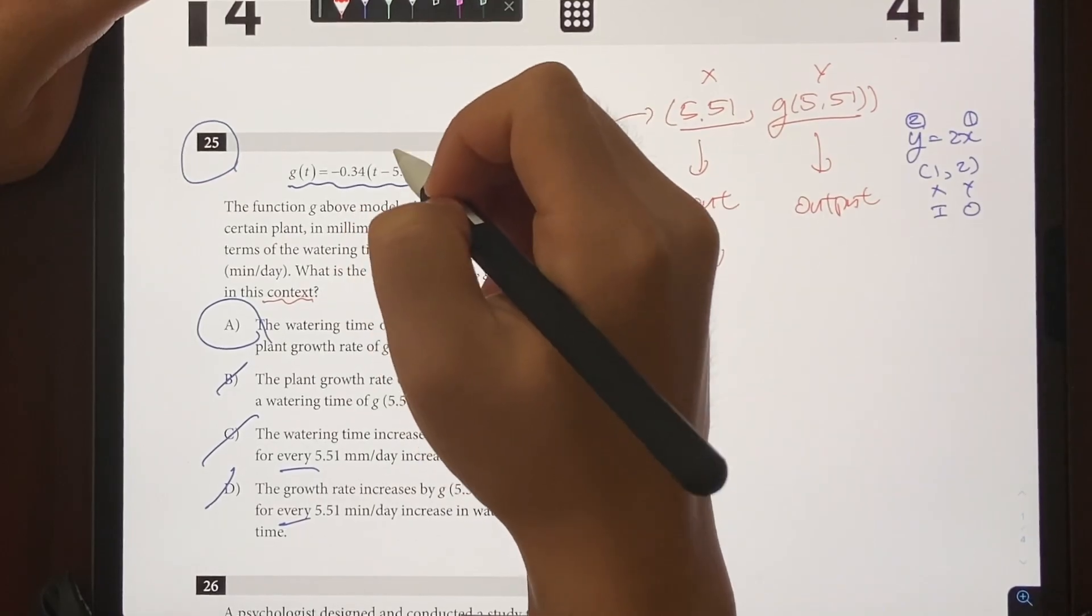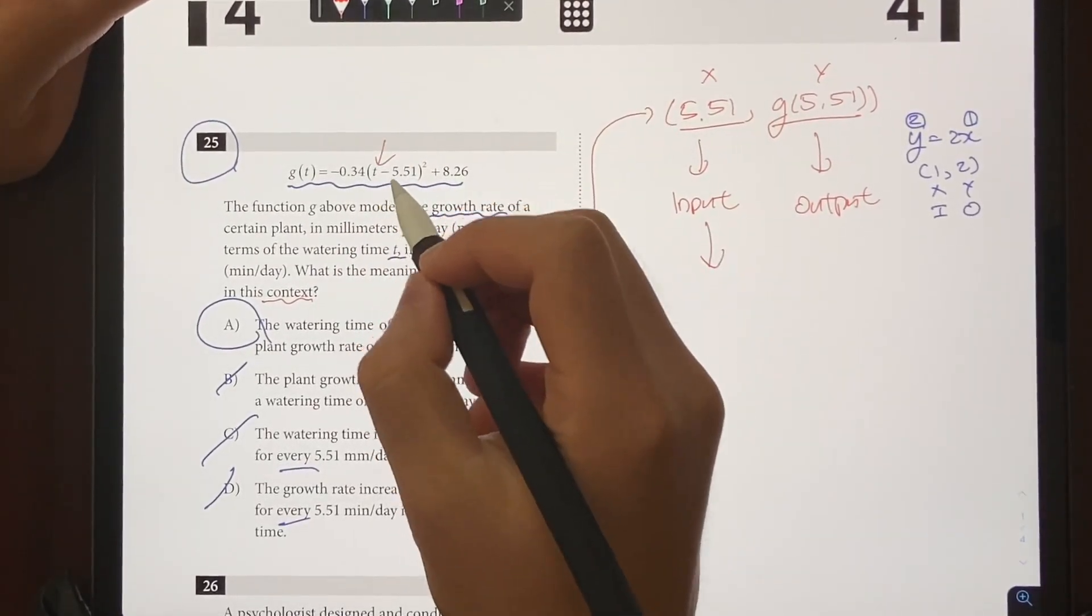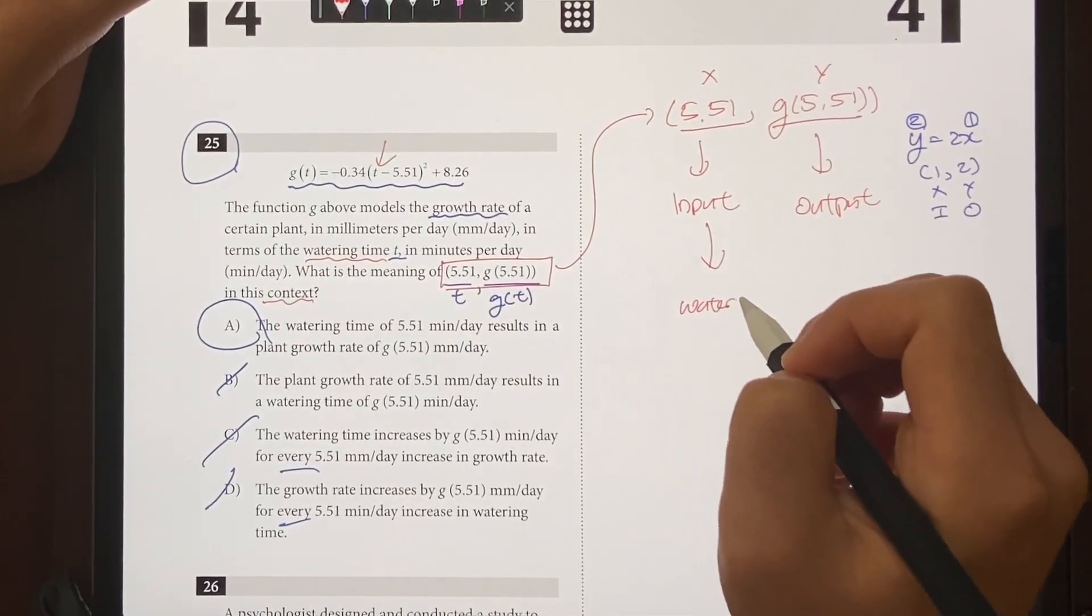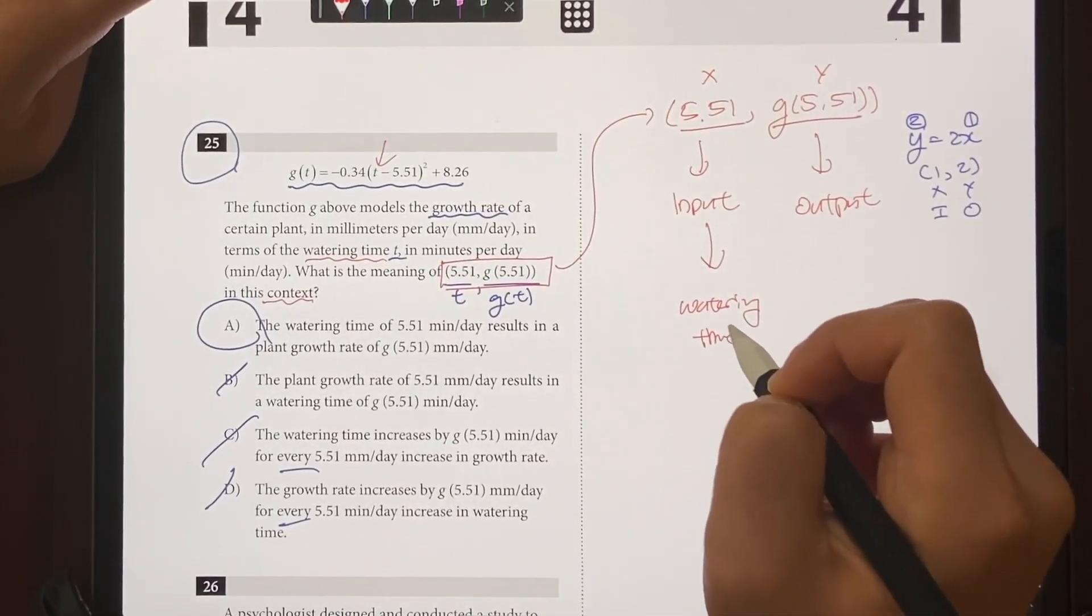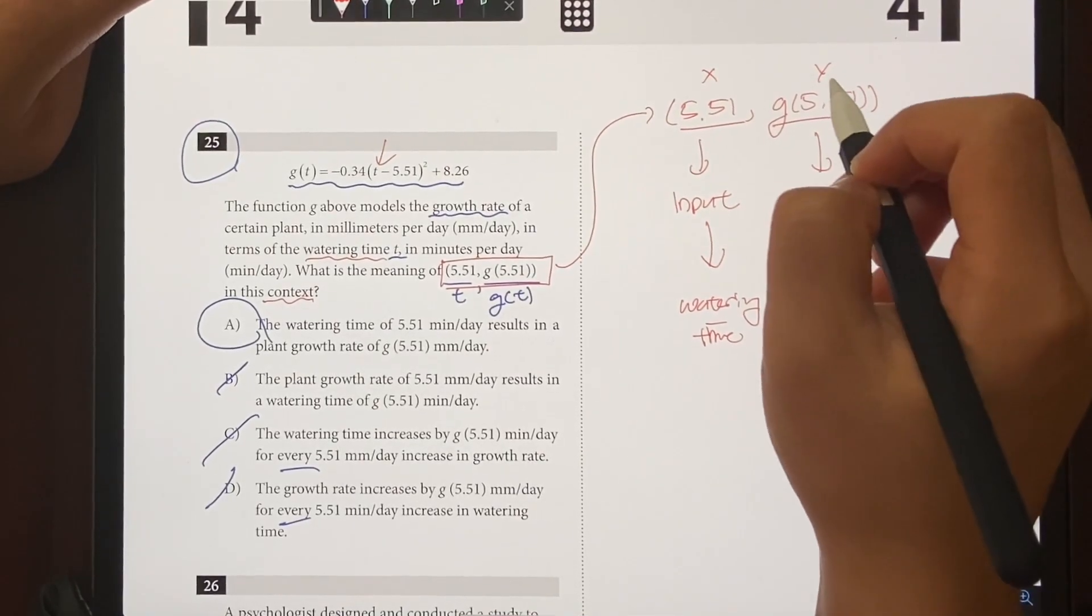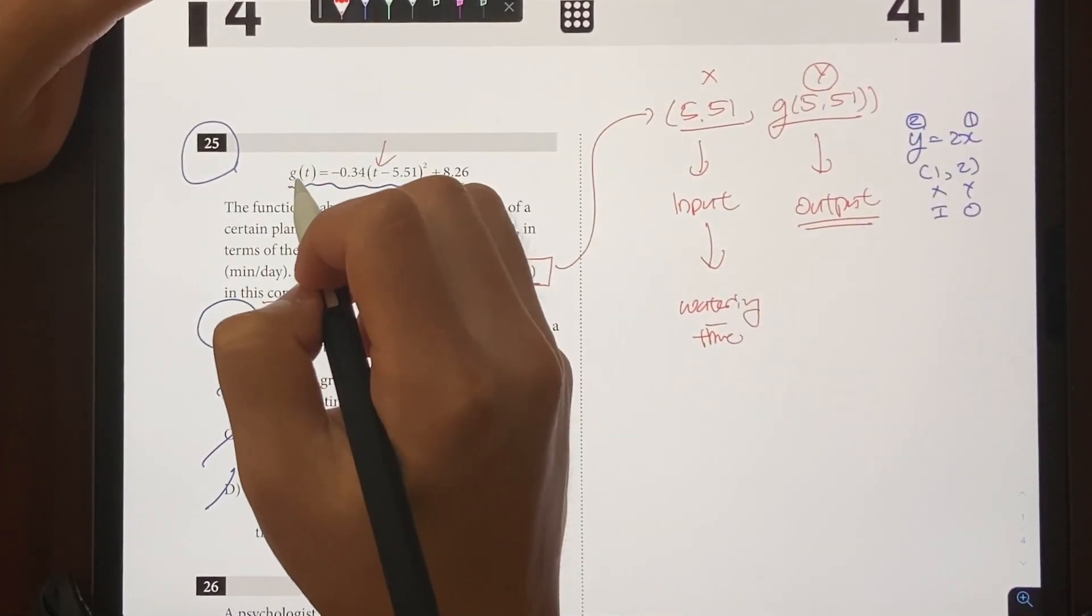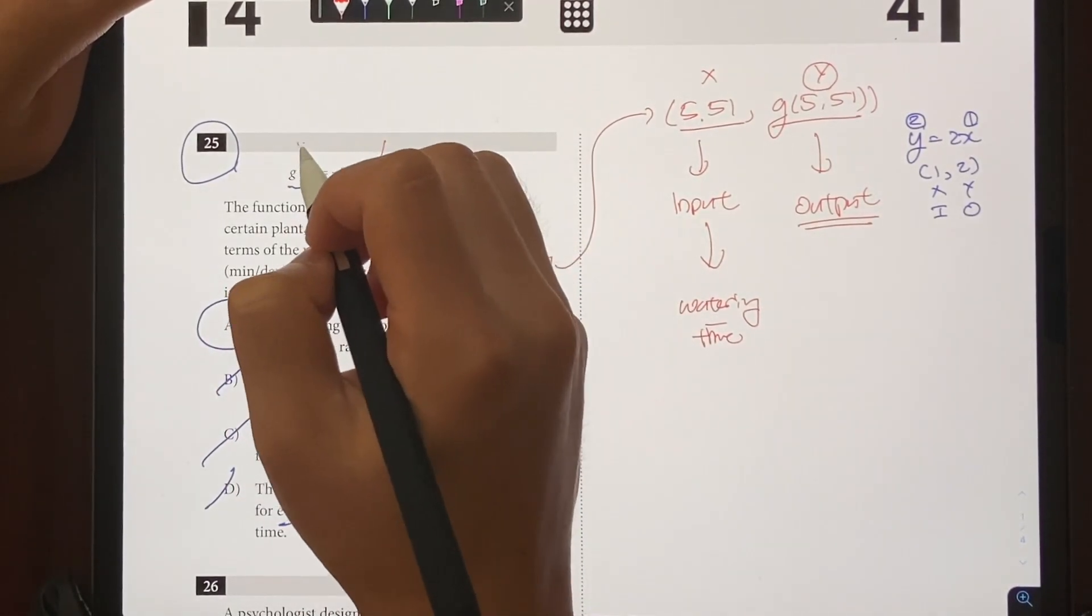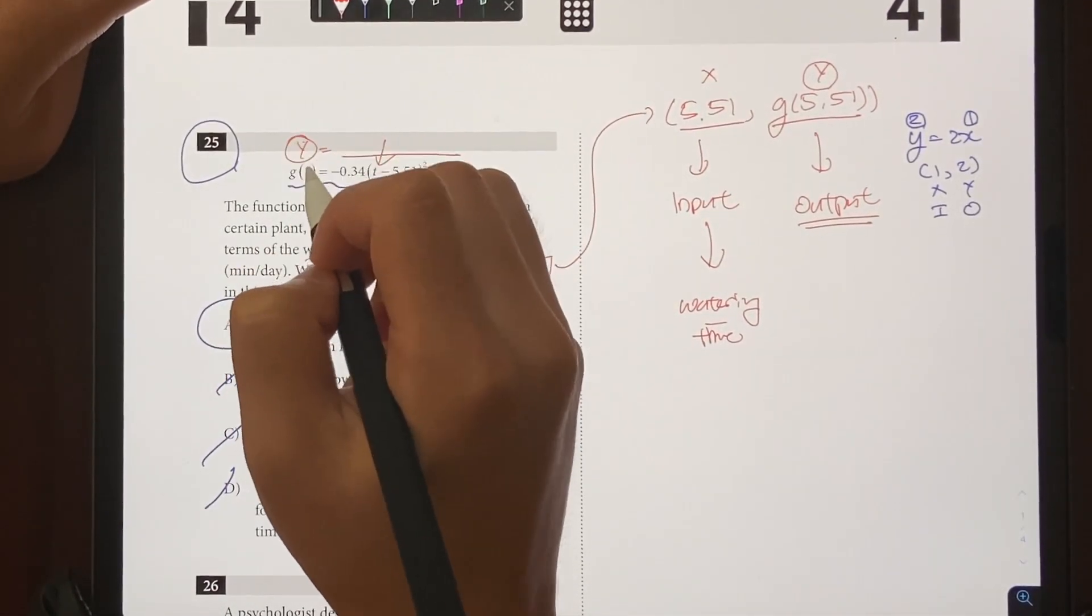But in terms of this context, what does the input refer to? It's referring to t, right? And what does t refer to? It's referring to the watering time. So your input is going to be the watering time. And what does your output represent? Well, your output is going to be your y value, and your y value is going to be g(t) because we can either say g(t) = this or y = this, so y and g(t) are essentially the same thing.